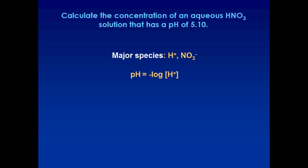You can take the negative log of the hydrogen concentration to get your pH, but that also allows you to work backwards to get your hydrogen concentration, which in this particular case would be 7.9 times 10 to the negative 6. Because there's one hydrogen in HNO3, the HNO3 concentration would also be 7.9 times 10 to the negative 6 molar.